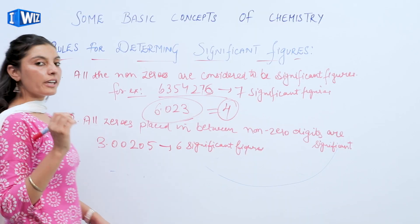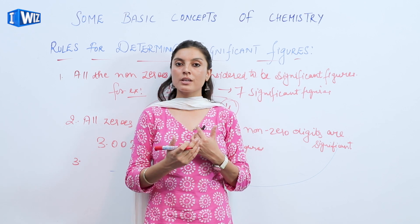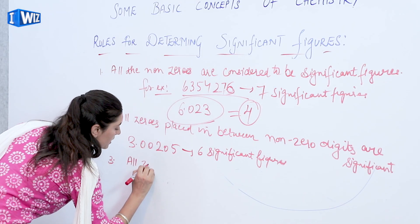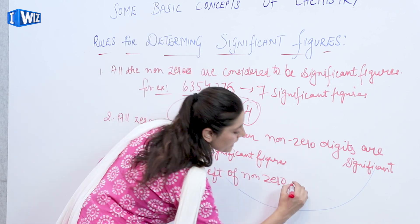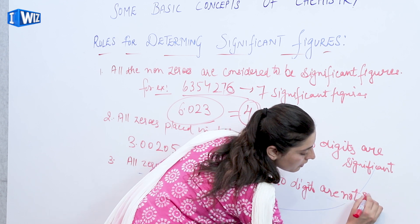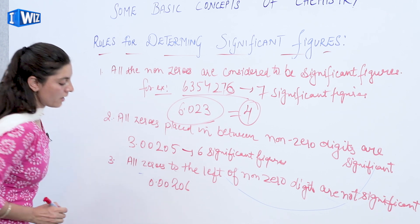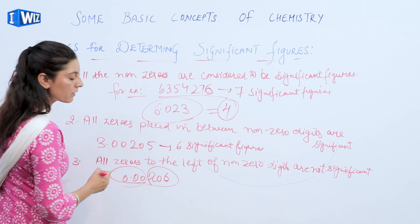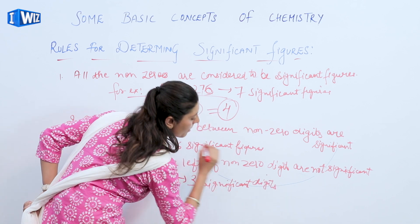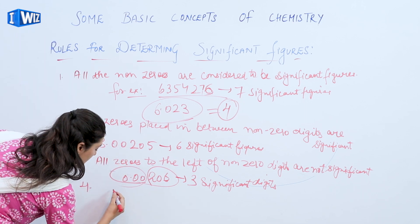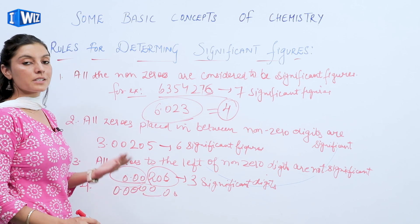The third rule is: all zeros to the left of non-zero digits are not significant. For example, take 0.00206. The two zeros before 2 are not significant at all, but the digits 2, 0, and 6 are significant. So we have three significant digits here. In general, any number of zeros appearing before a non-zero digit will not be counted — they are considered non-significant.